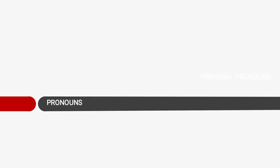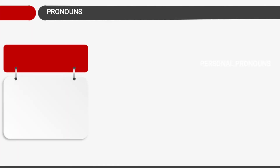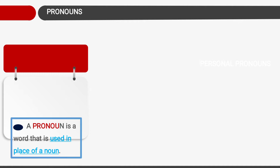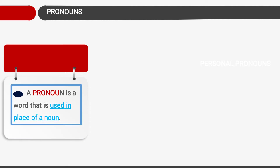First of all we will know what is pronoun. A pronoun is a word that is used in place of a noun. Now you all know about noun. A noun is a name of person, place, animals or things. So the word which is used in place of a noun is known as pronoun.